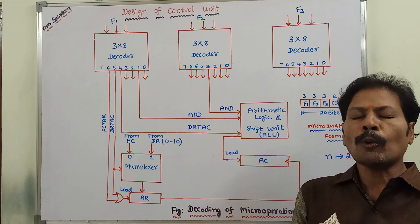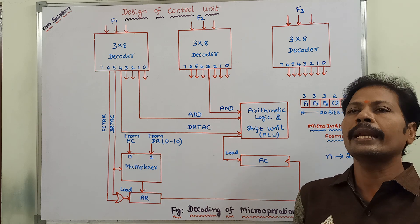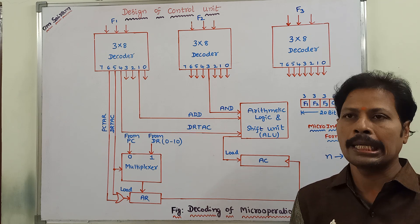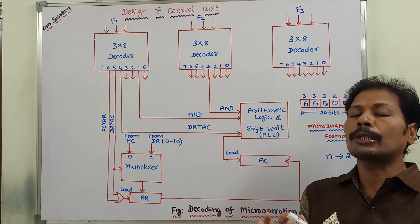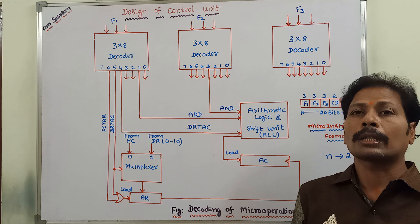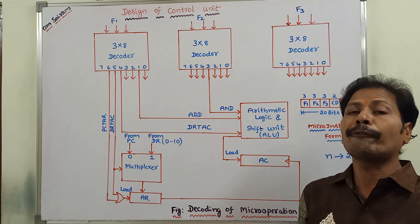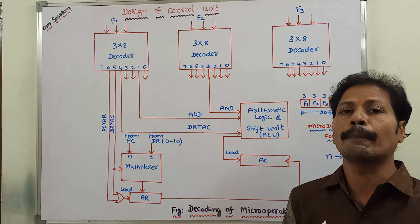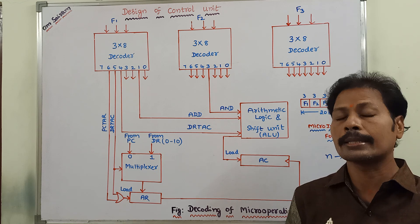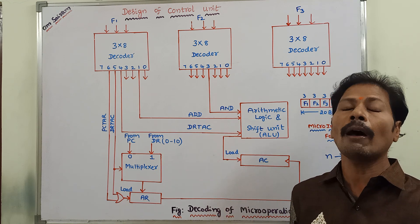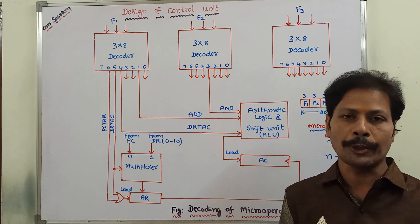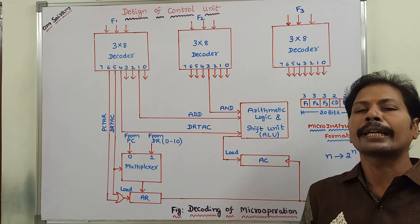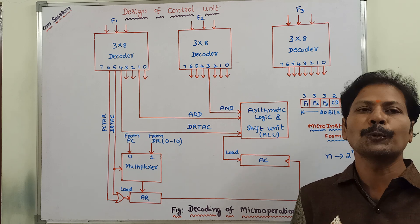A control unit is mainly used for generating control signals. By using those control signals, the control unit can perform various data transfer operations between registers and also between various functional units. Generally, a control unit can be designed in two ways.